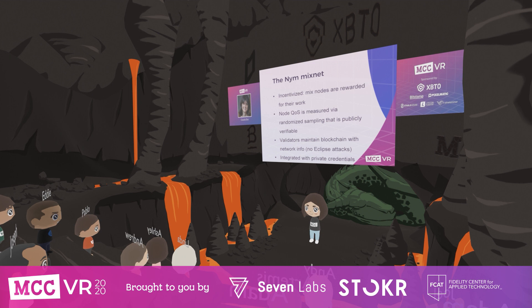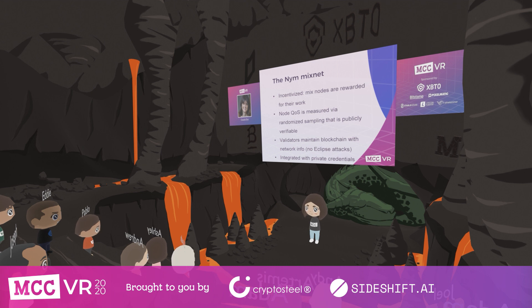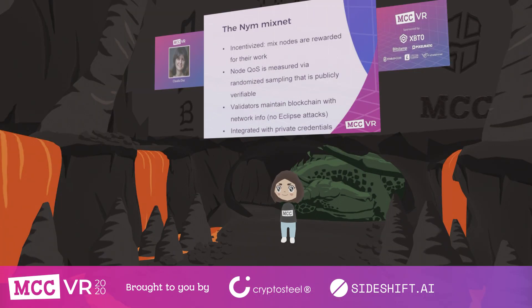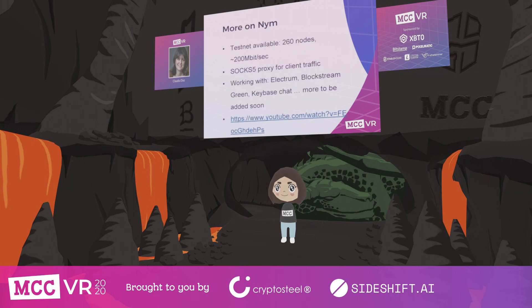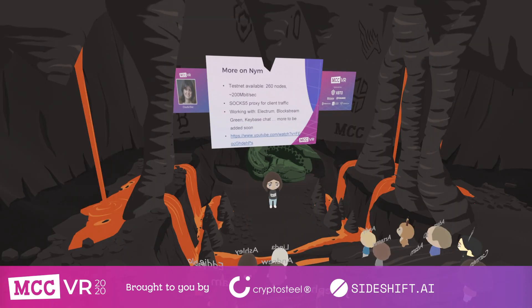The system is more complex than just a mix net. We also have validators that maintain a blockchain with network-wide information, which prevents eclipse attacks and ensures a consistent global view by preventing anyone from receiving a different view of the network. The system is also integrated with private credentials, which enables combining network privacy with private authentication.